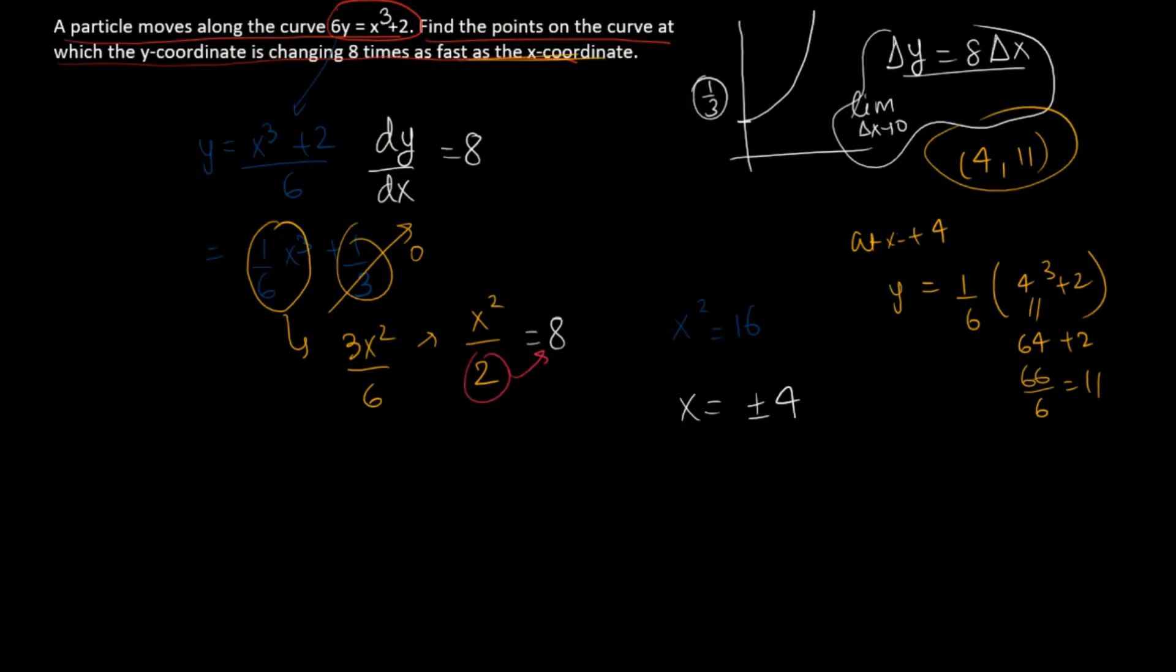The other point is when x is equal to negative 4. In this case we will get y equals 1 over 6 of negative 4 cubed plus 2. Negative 4 cubed is negative 64 plus 2 is negative 62. Negative 62 by 6 is the y coordinate. So the other value will be negative 4, negative 62 divided by 6.